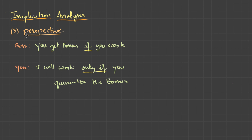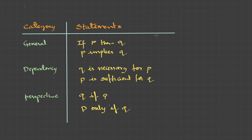The third is the perspective view. Think of a case where your boss says: 'You get bonus if you work.' And you reply: 'I will work only if you guarantee the bonus.' Putting all the possible English statements to represent implication — all these statements are the same: if P then Q; P implies Q; Q is necessary for P; P is sufficient for Q; Q if P; or P only if Q.